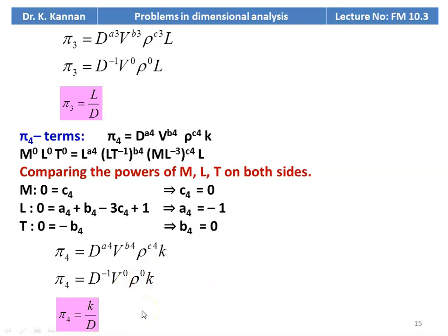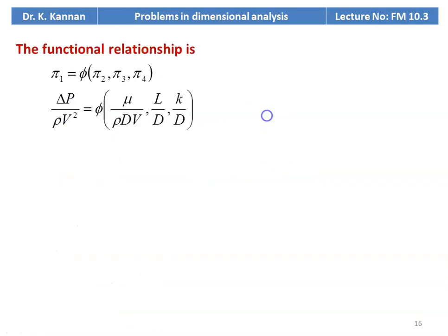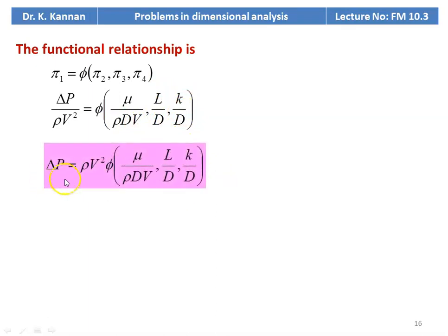All pi terms are calculated: pi1 = ΔP/(rho·V²), pi2 = mu/(rho·D·V), pi3 = L/D, pi4 = k/D. The functional relationship is: ΔP/(rho·V²) = f(mu/(rho·D·V), L/D, k/D), therefore ΔP = rho·V² · f(mu/(rho·D·V), L/D, k/D). This is the expression for pressure difference in terms of other variables.